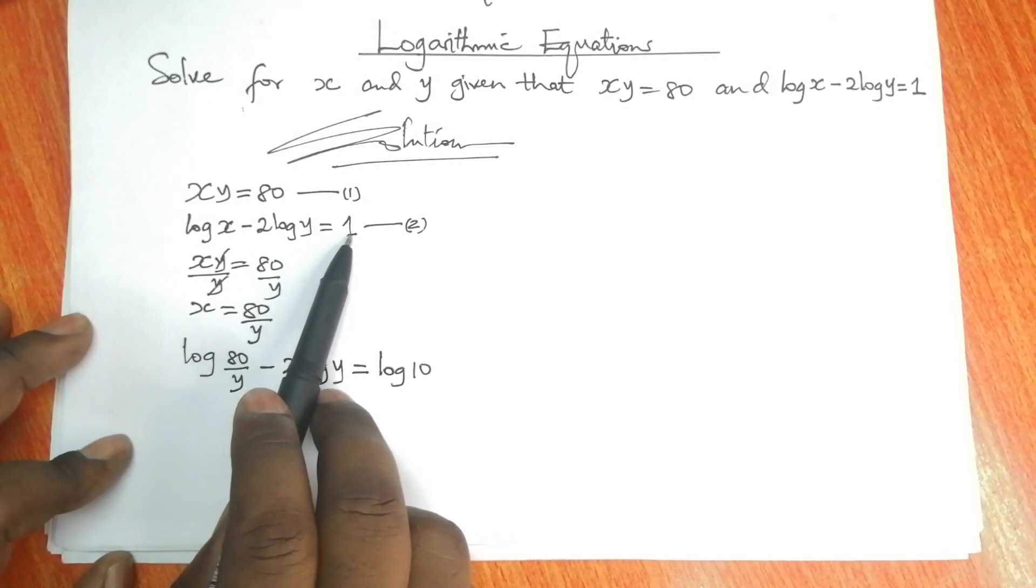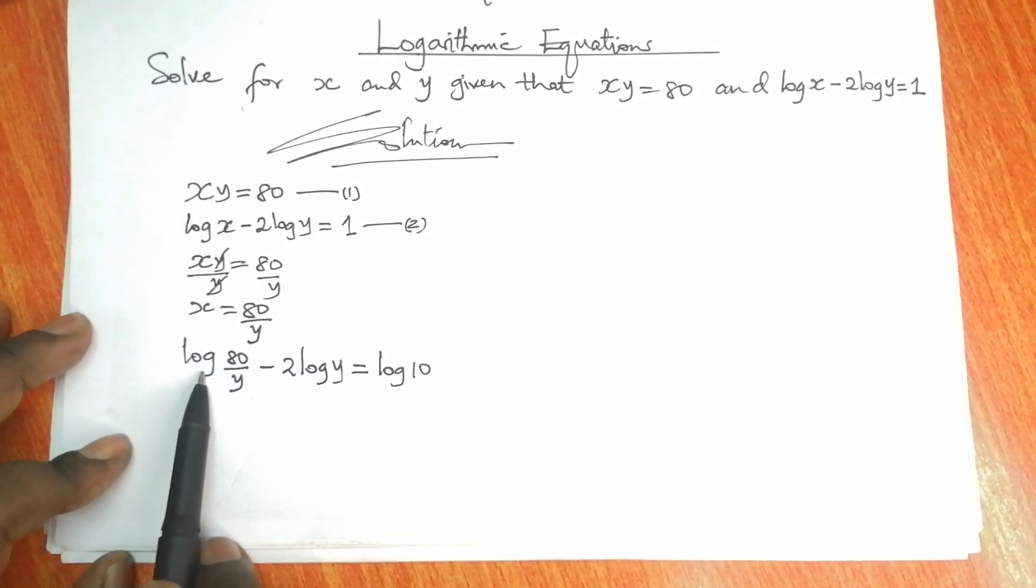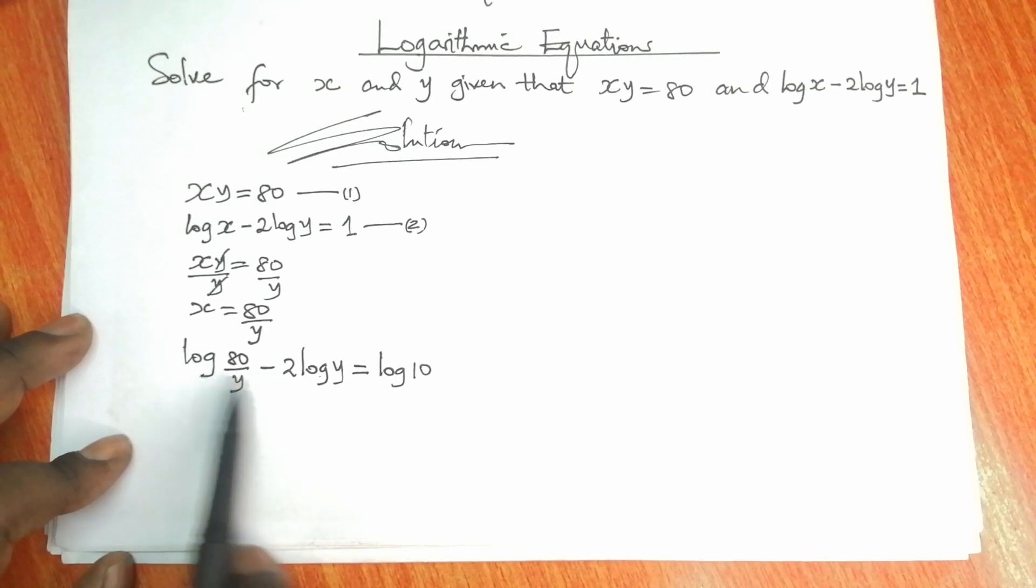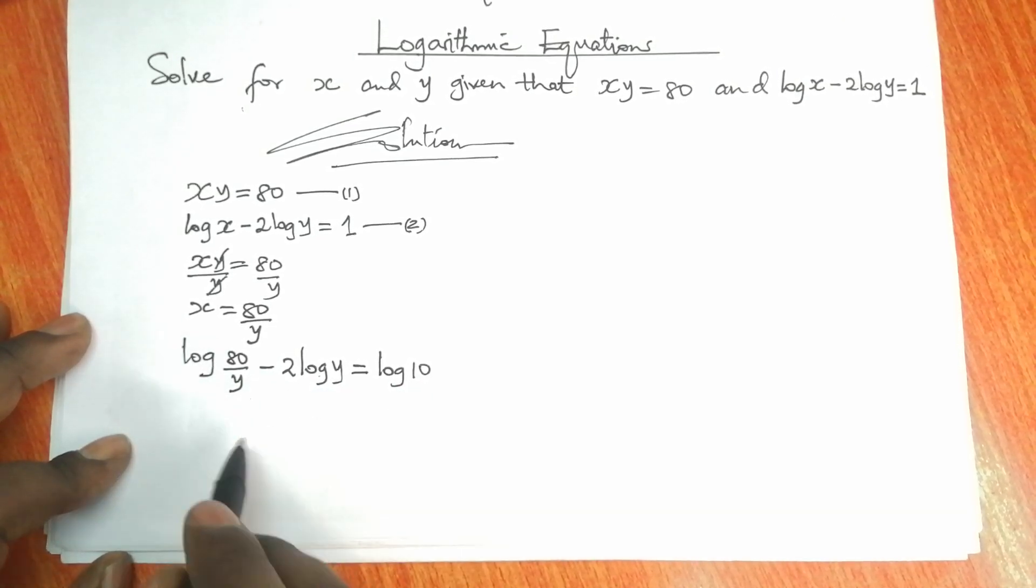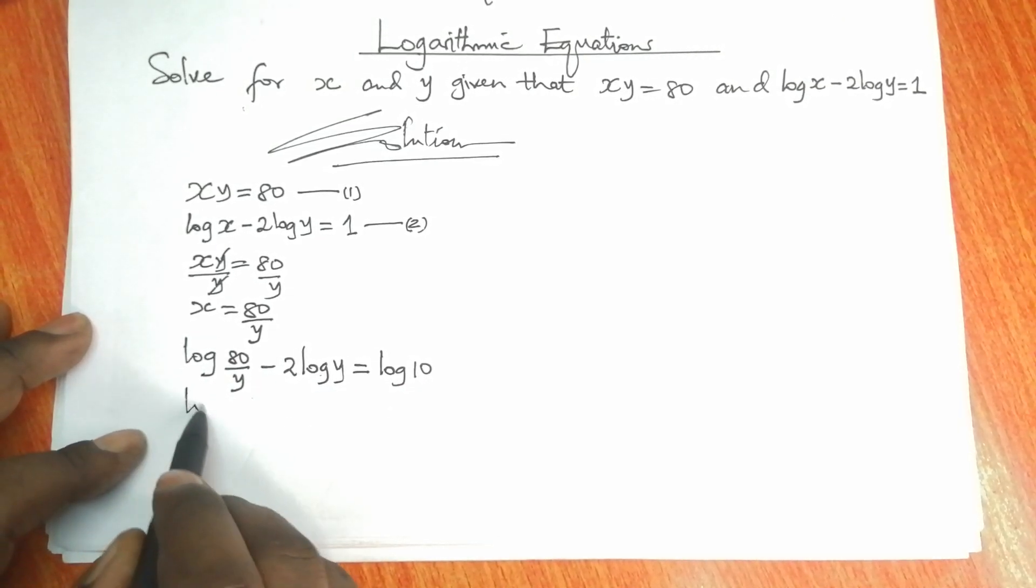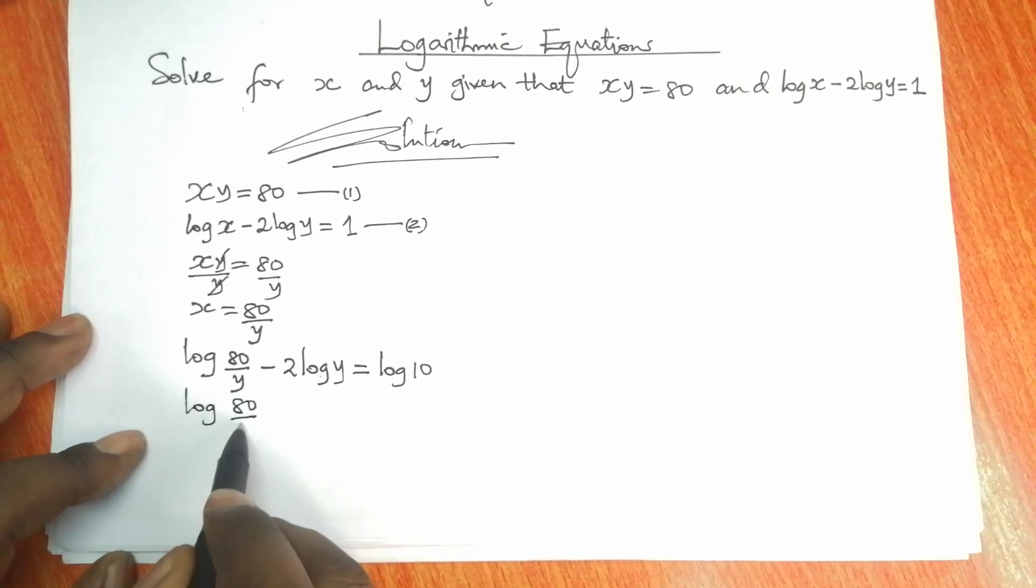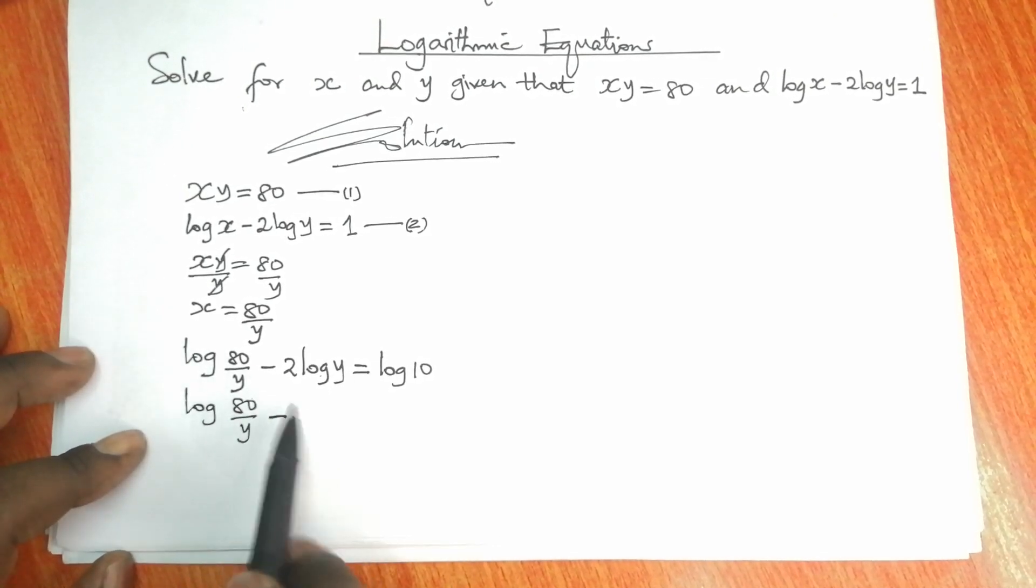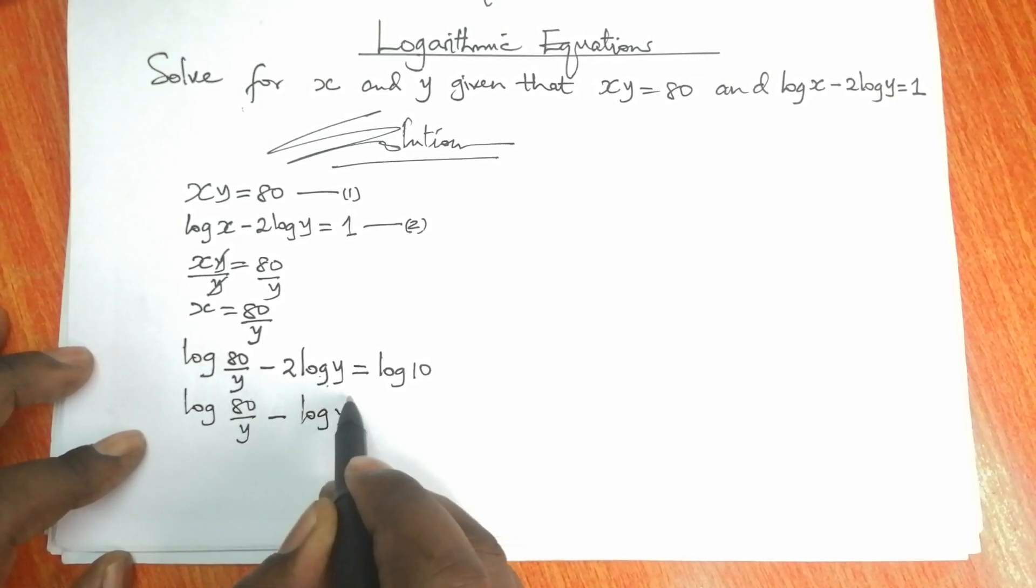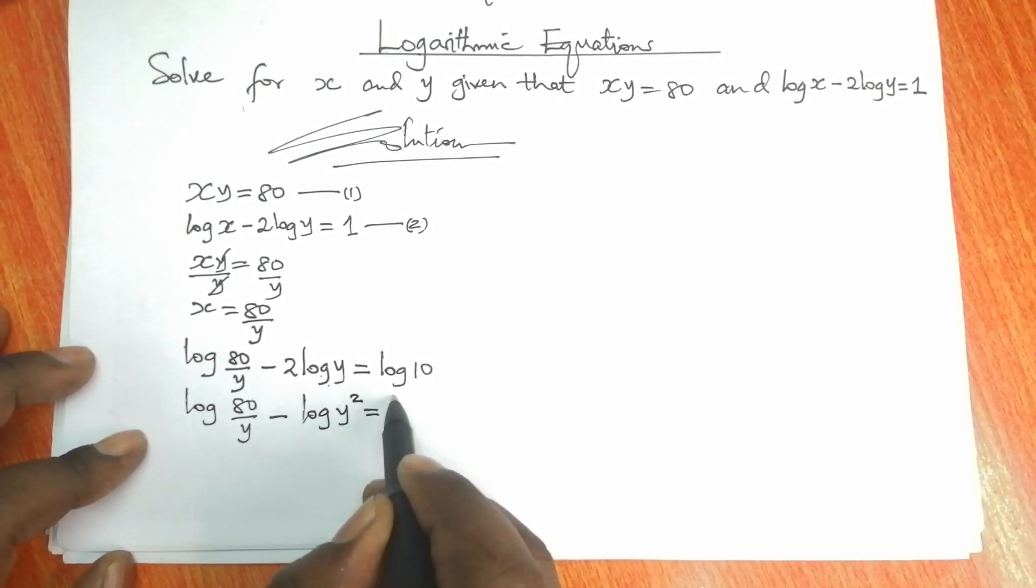So that both sides are similar. Both sides are logarithms now. So the next step would be log 80 divided by y minus 2 log y becomes log y squared, which would be equal to log 10.